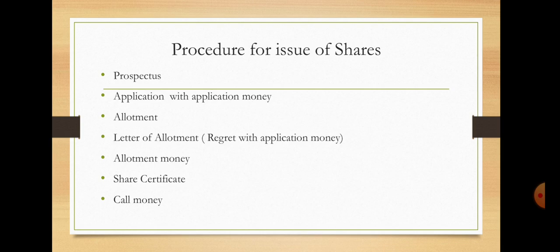After the prospectus, if the general public is willing to apply for shares, they have to pay the application money along with the share application. After the company receives applications from the general public, the company allots shares to particular applicants. If the company receives over-subscription, after allotting the shares, the company must return all remaining application money with a regret message to the applicants.